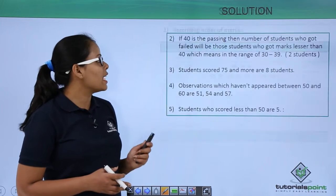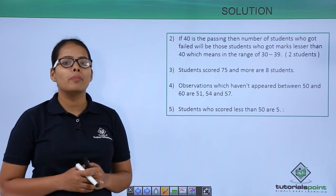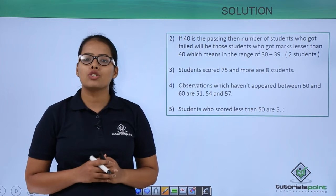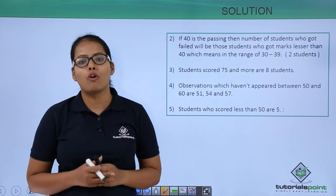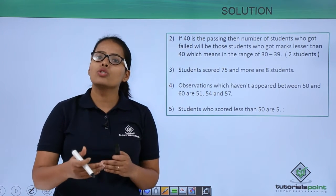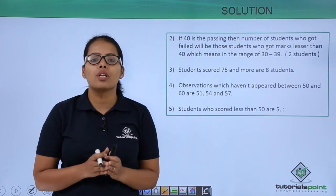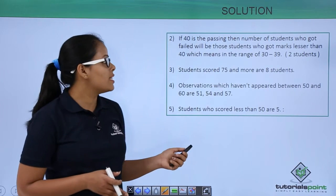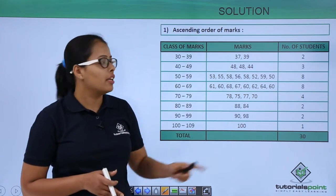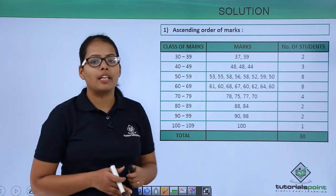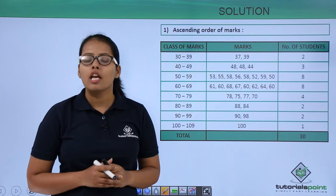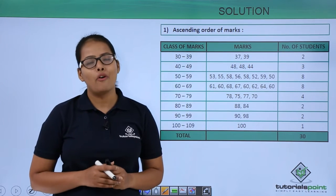For the second problem, if 40 is the passing marks, students who scored less than 40 are the ones who got failed. Here, the marks less than 40 are 37 and 39, so there are exactly two students who got failed, because they scored less than 40 marks.